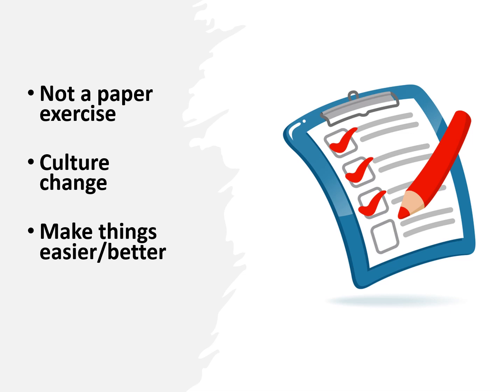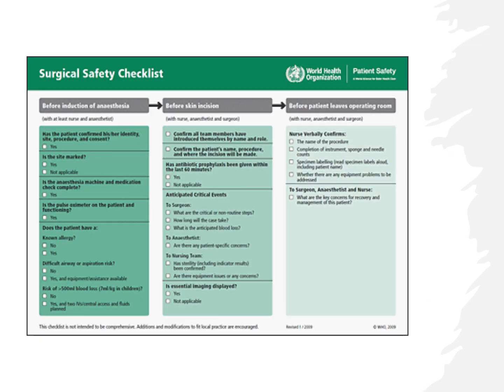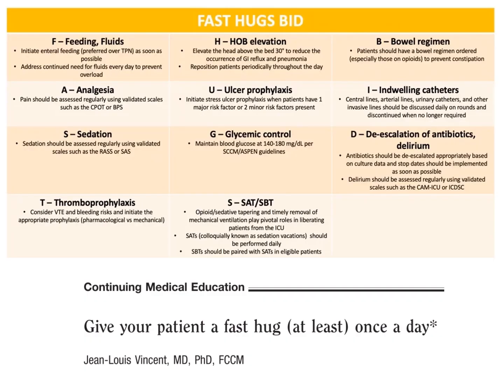Checklists help with memory recall, especially with mundane matters easily overlooked — like remembering to raise the head of the bed in an ICU patient having a fit. They also make explicit the minimum standards of care, establishing a higher standard of baseline performance. This has evolved into the surgical safety checklist. There's also a tool described initially by Jean-Louis Vincent called Fast Hugs, described in 2005, which he then extended to Fast Hugs BID in 2009. The aim was to help ICU doctors ask questions about things that are sometimes forgotten.